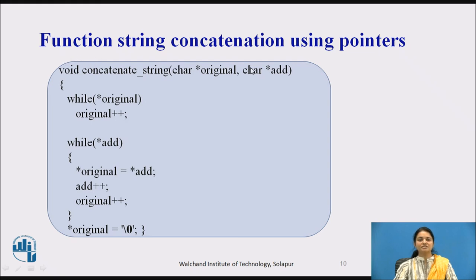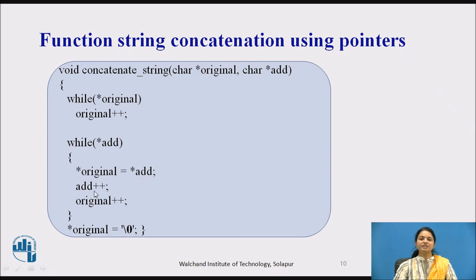Here is the solution: function for string concatenation using pointers. While the 'original' pointer is not null, it keeps incrementing the original pointer until the first string is complete. Then it goes to the second pointer — the 'add' pointer — and the 'original' pointer is incremented while the first character of 'add' is joined to the first string. So we increment both the source and destination pointers, copying or joining both strings until the null of 'add' is reached.